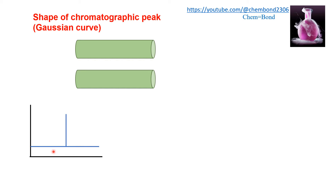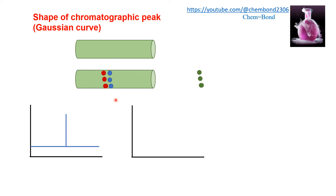But this is not the case — they get eluted at different times. The sample components injected into the column are shown here in three colors, given just for convenience. These are solute components of the same species, but they elute at different times. Some molecules travel fast, so they elute first and produce the first portion of the peak, shown in green.